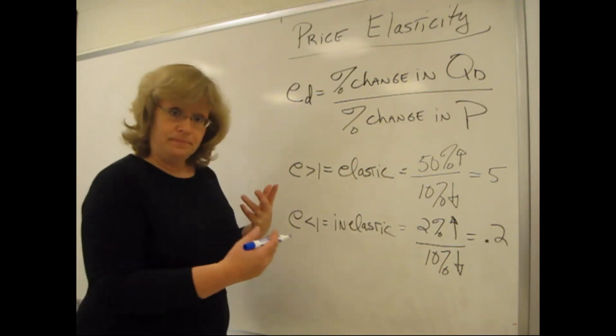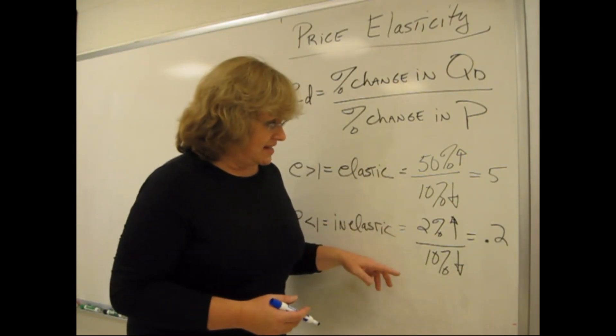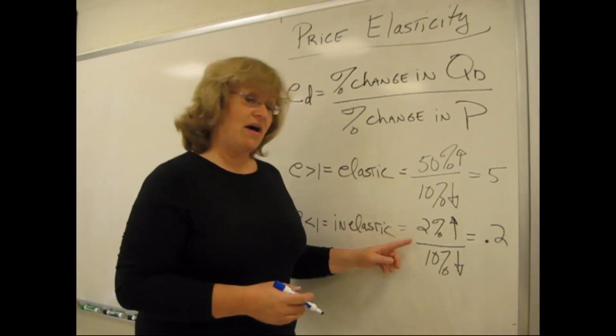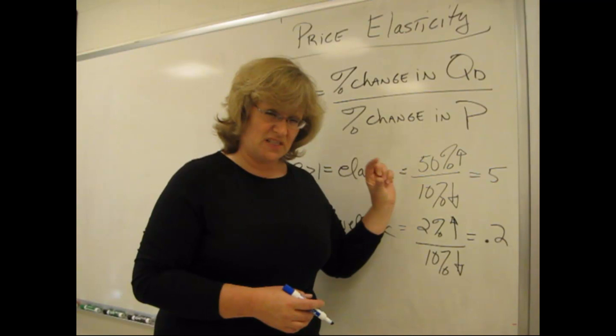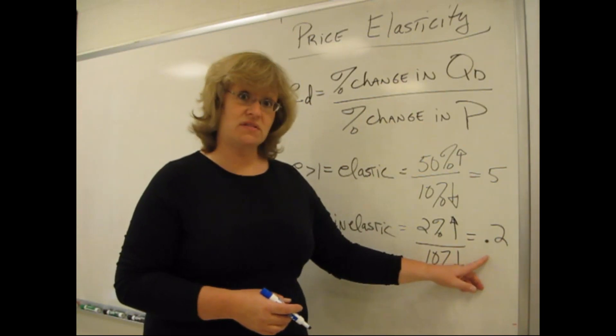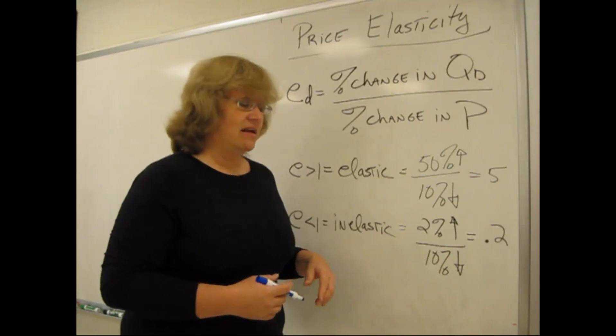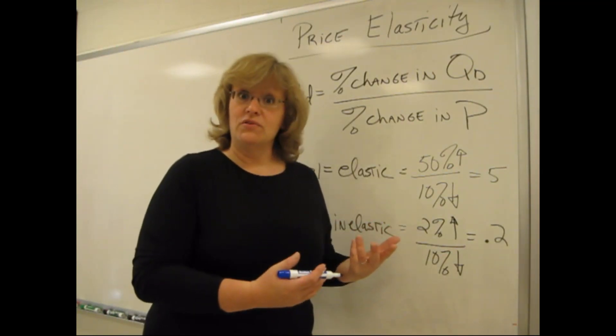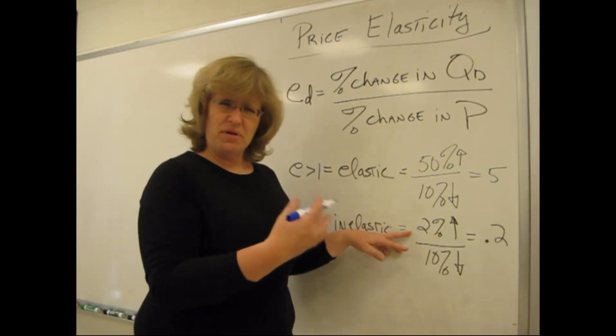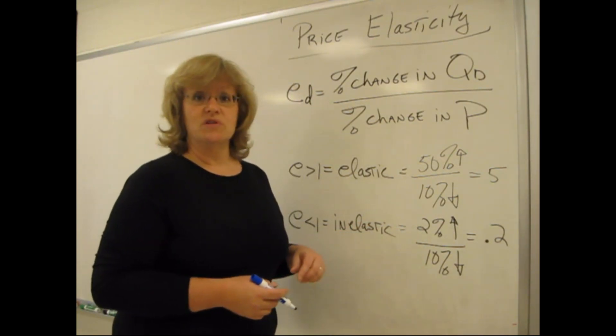Now inelastic, on the opposite side of this continuum, might be seen by this kind of example. Same 10% drop in price. But this time, the amount that people want to buy only rises by a smidgen. It only goes up by 2%. So 2 divided by 10 is 0.2. That's less than 1. That's an inelastic demand. That also follows along with our idea of responsiveness here. If a 10% drop in price hardly causes the amount that people want to buy to change very much at all, just a 2% rise, that's pretty unresponsive.